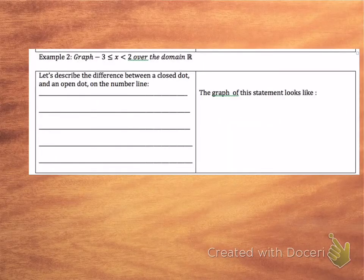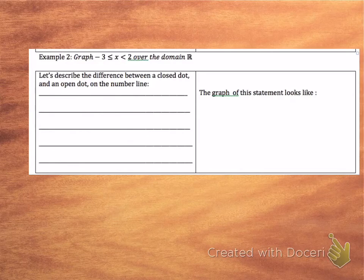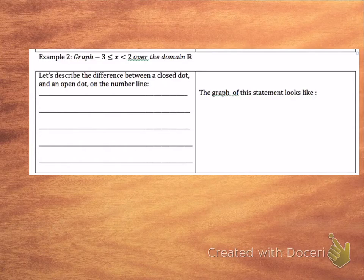In example 2, we're looking at graphing -3 ≤ x < 2 over the domain of all real numbers. So we've got a combination of things, plus we're looking at all real numbers. We want all the values of x that are greater than or equal to negative 3, and the values that are less than 2, so it has to comply with both pieces.